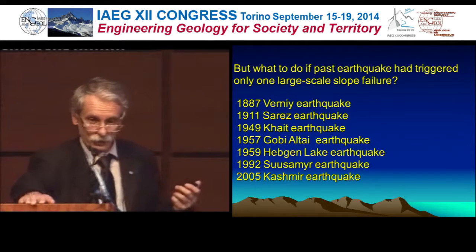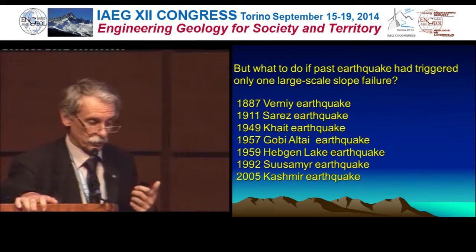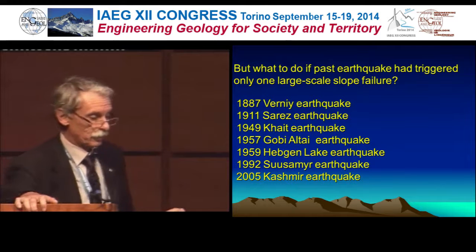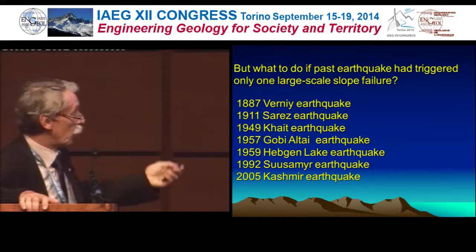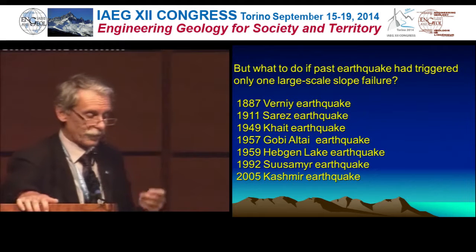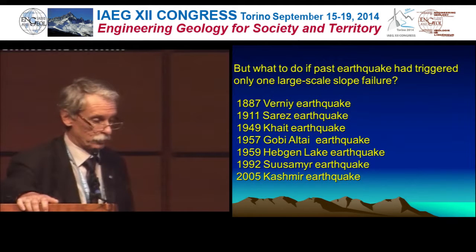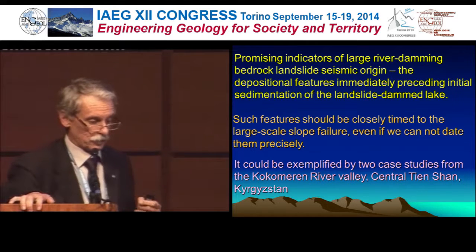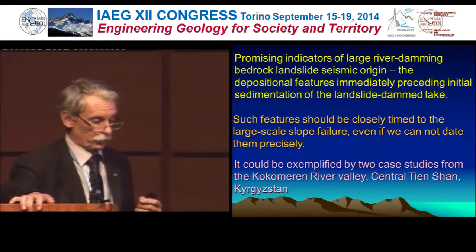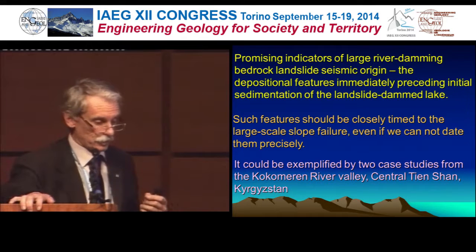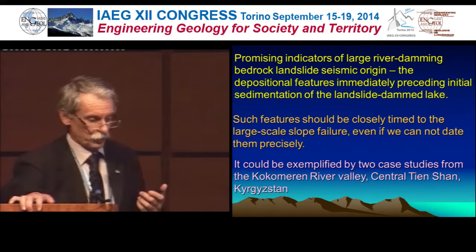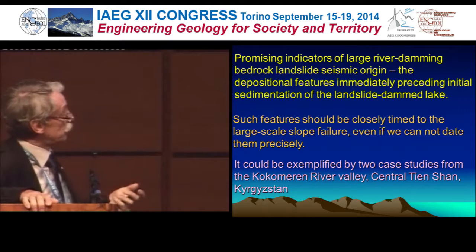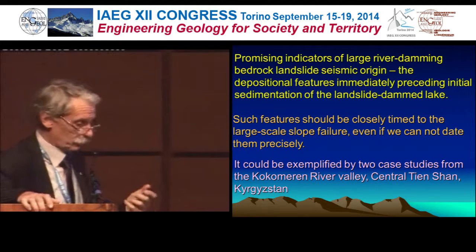Another case: what should we do if a past earthquake triggered only one large-scale slope failure, as happened in many of the cases listed here — all of these large earthquakes produced only one large-scale slope failure? A promising indicator of large river damming bedrock landslide seismic origin could be found among the depositional features that immediately precede initial sedimentation of the landslide-dammed lake.